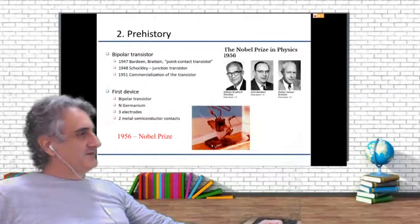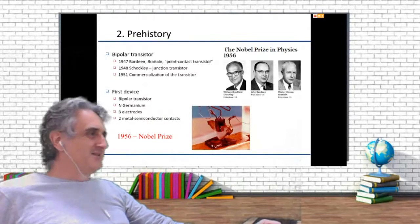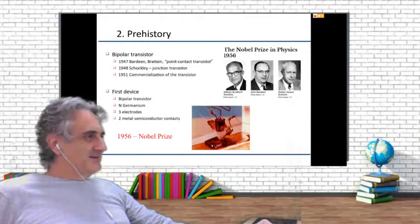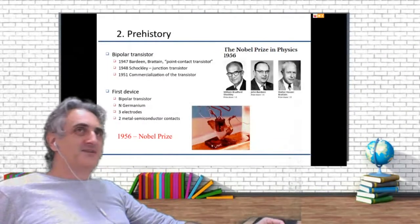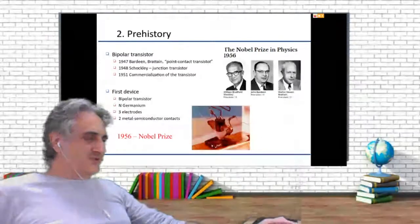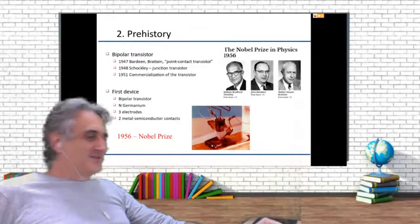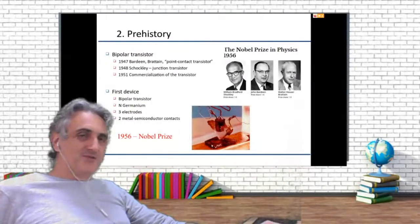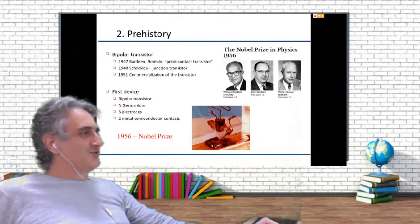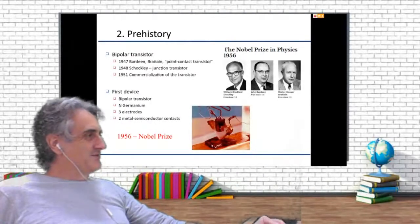They were working under Shockley. It was a team of three — well, not exactly. Shockley was the boss and Bardeen and Brattain were subordinates. But Shockley wanted to keep all the merit for any invention they made, so the other two were not happy with that. So they discovered the point contact transistor without Shockley knowing.